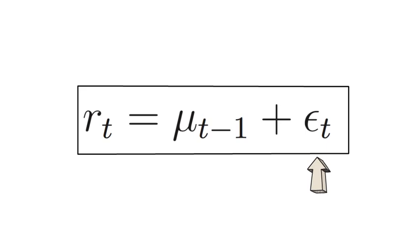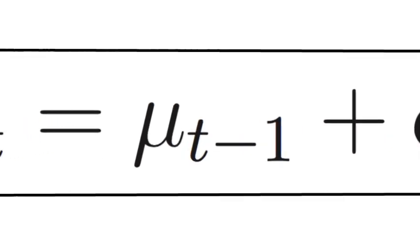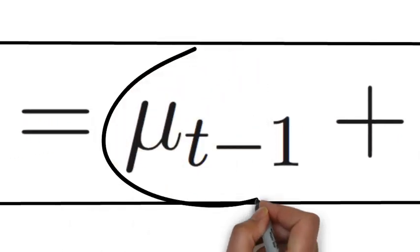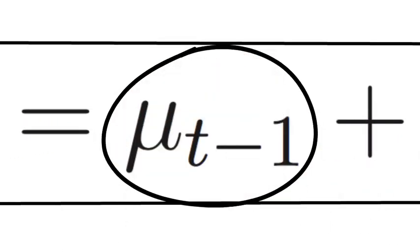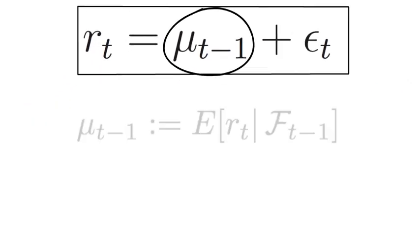Now what do we mean by a predictable component? Well that says that mu t-1 is your best educated guess as of time t-1 about the unknown magnitude of rt.